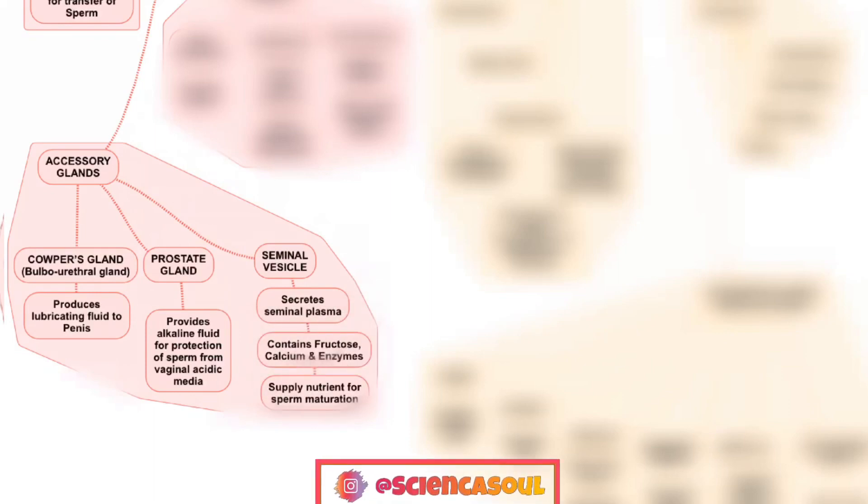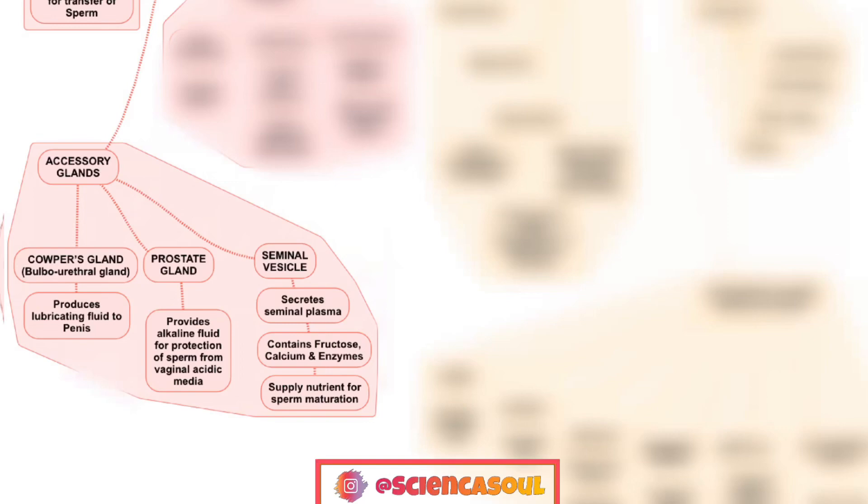The third accessory gland is the seminal vesicles, which secrete seminal plasma and contain fructose, calcium, and enzymes that supply nutrients for sperm maturation. These account for 60% of the seminal plasma. Remember: seminal plasma plus sperm equals semen.